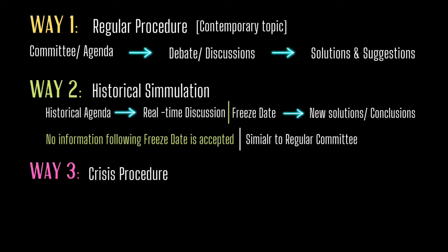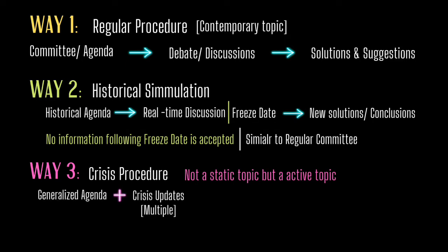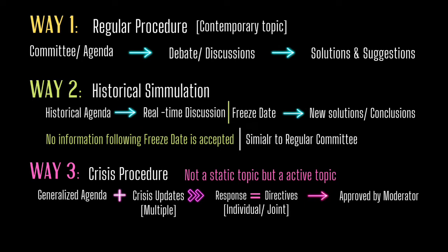Way 3 is a crisis procedure where participants discuss not a static topic but an active one. A generalized agenda is given to participants before the committee session begins. After the committee process starts, the committee is introduced to multiple crises that participants are required to solve through either joint action or individual moves. These crises act as updates to the overall agenda. As a response, committees allow participants to draft directives — actions that individual or groups of delegates are willing to take — which are submitted to the moderators. The moderators verify the feasibility of the action and pass the directive if they feel it is relevant and realistic; if not, the directives are rejected.